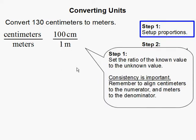And continuing to set up our proportion, we have to set up the ratio between the known value, which is 130 centimeters, to the unknown value, which is the meter. And remember, consistency is important. Because if I put centimeters at the top, I have to put all centimeters at the top. When I put meters at the bottom, I have to be consistent and put all the meter values at the bottom.